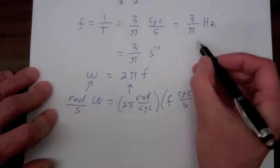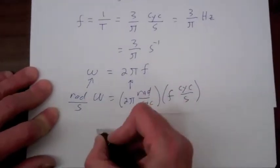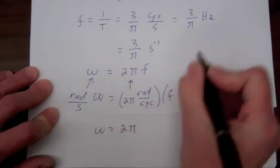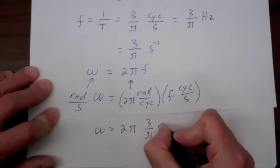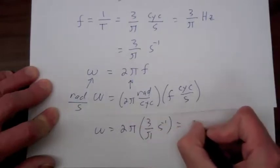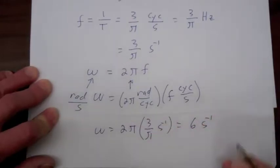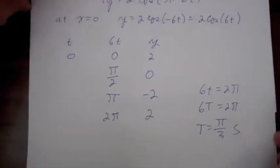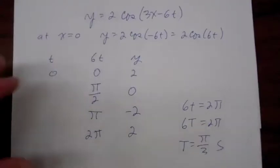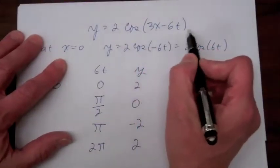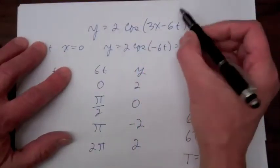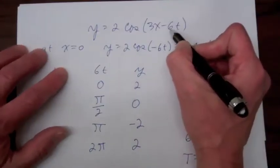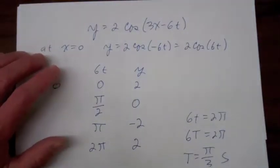For our particular example where the frequency is 3/π hertz, the frequency in radians per second is 2π times 3/π = 6 inverse seconds, or 6 radians per second. Looking at y = 2cos(3x - 6t), we see that the number multiplying the time is the frequency in radians per second.